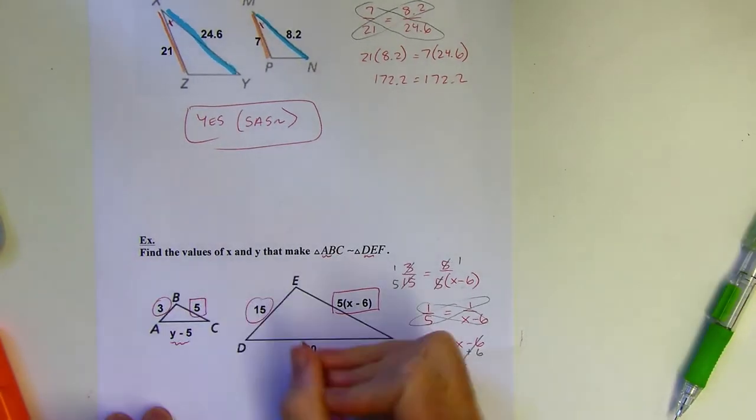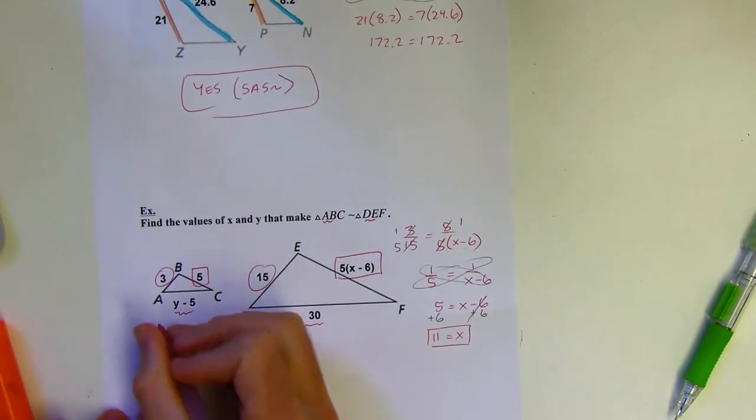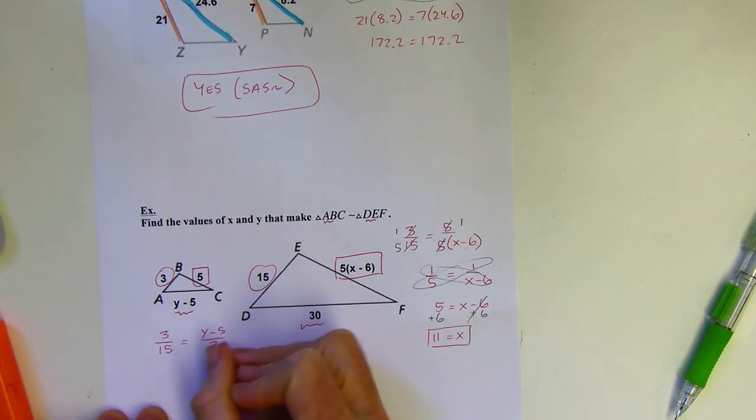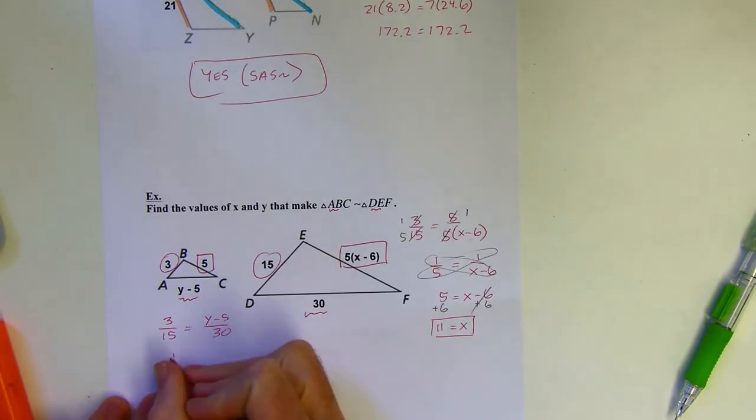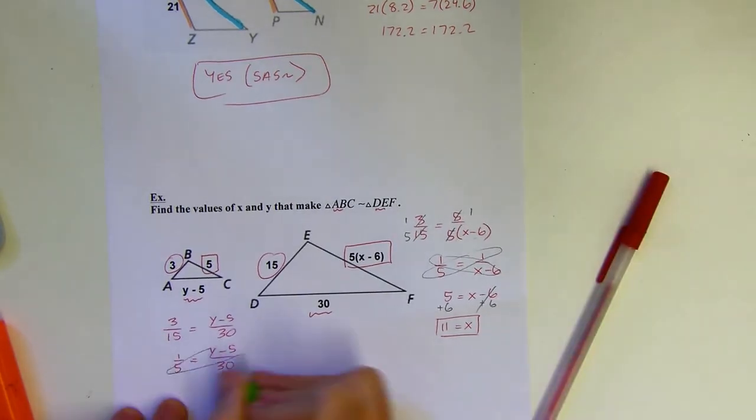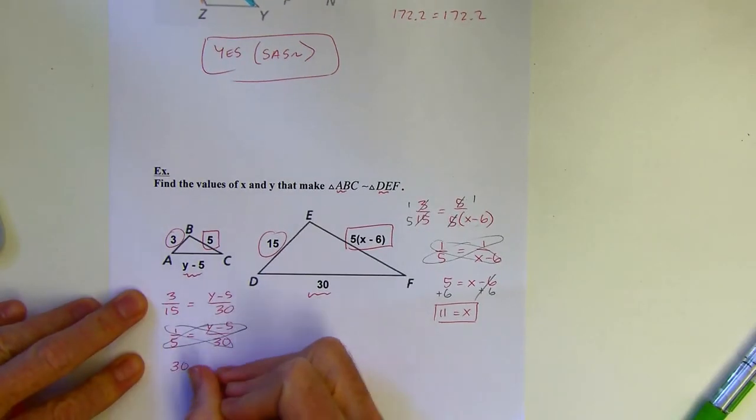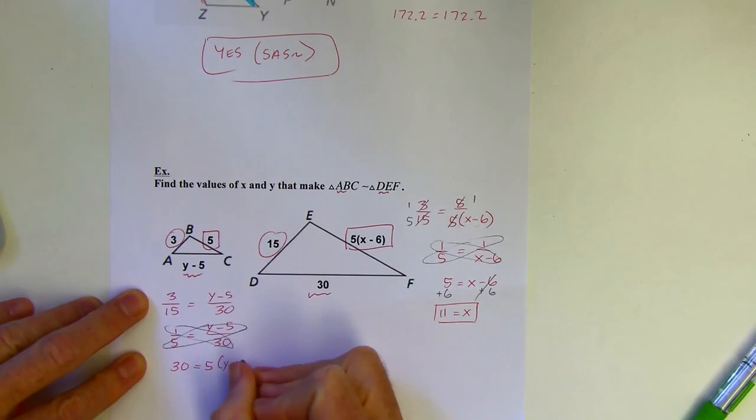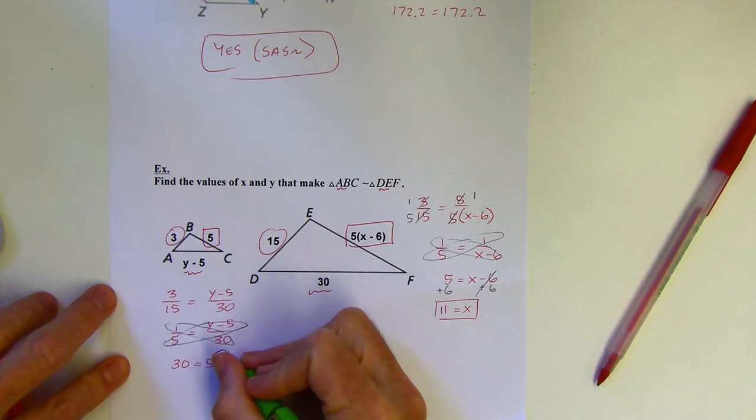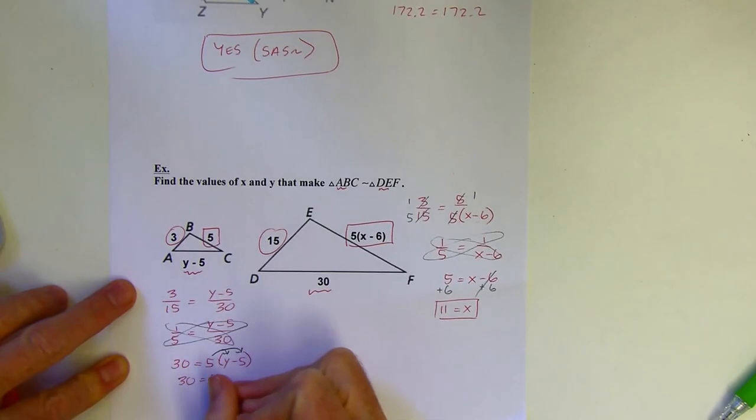So let's try the same thing again. So I know y minus 5 should be in proportion to 30. So I can say 3 is to 15 as y minus 5 is to 30. And again, I'm going to reduce the 3 15s. I just feel like there's less chance I'll make a little mistake when I'm dealing with smaller numbers. I especially like dealing with 1s because it makes life easy. 30 equals, and remember, this is going to be 5 times the quantity y minus 5.